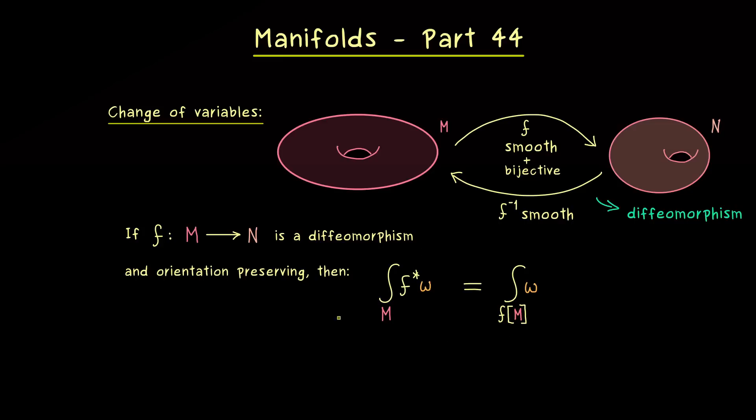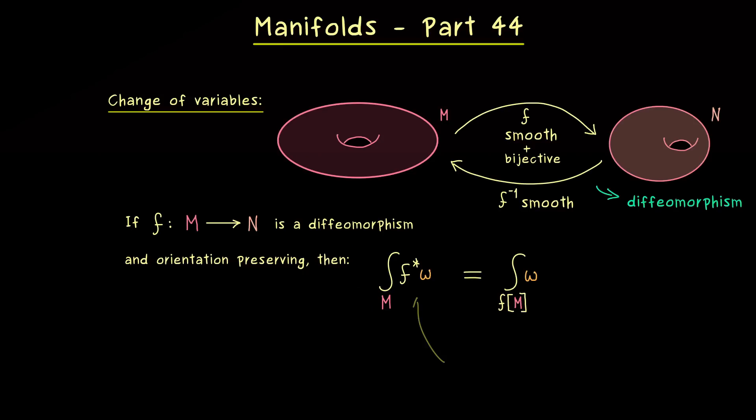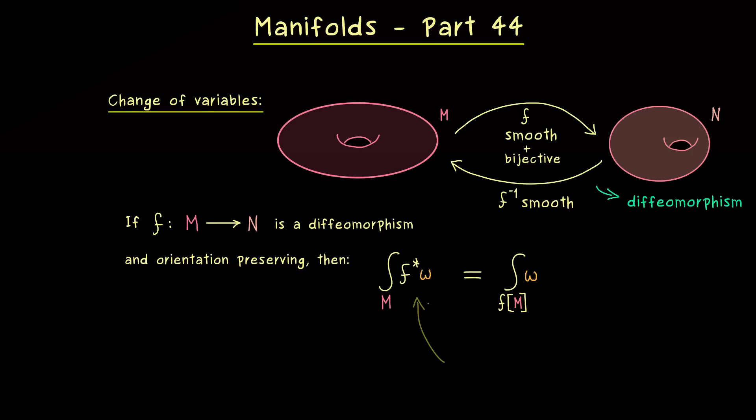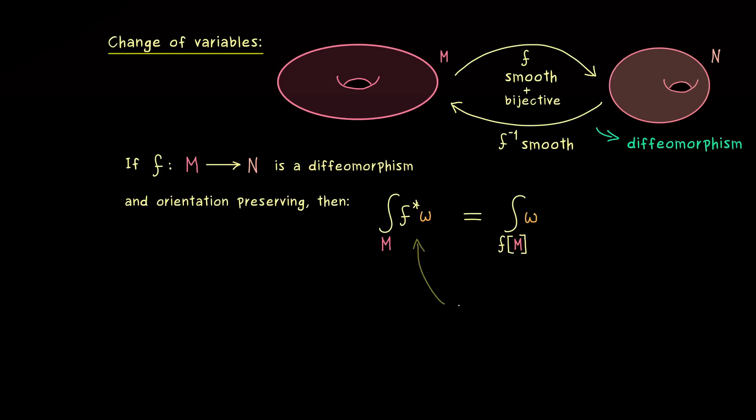Now before we go into the proof of this nice theorem, let's recall some important definitions here. And let's start by explaining what this pullback f star omega actually is. It's a differential form on the manifold M, so we can evaluate it at every point p in M. And then it's just an n-form defined on the tangent space at the point p, so it gets n vectors as an input.